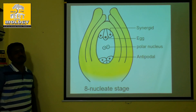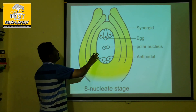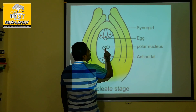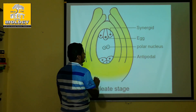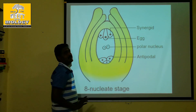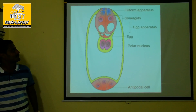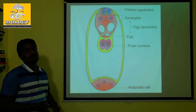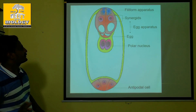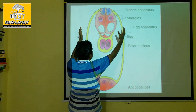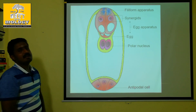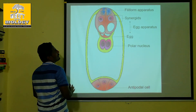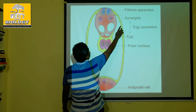This is the diagram of the state board. We have to identify the tube — synergids, polar nuclei, egg cell, secondary nucleus, antipodal. So this is an embryo sac — there is a megaspore, an embryo sac.